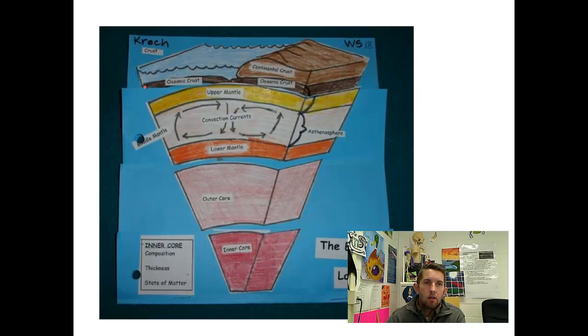Here's our continent sitting on top of our oceanic crust. This then from here to here is going to be our lithosphere. We have our asthenosphere right underneath it. We have our mesosphere, our outer core and our inner core.